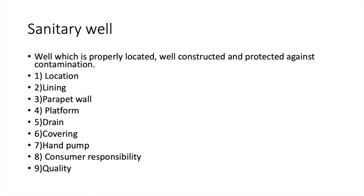Springs — when groundwater comes to the surface and flows freely under natural pressure, it is called a spring. Springs may be of two types: shallow springs, which dry up quickly during summer months, and deep springs, which do not show seasonal fluctuation in the flow of water.